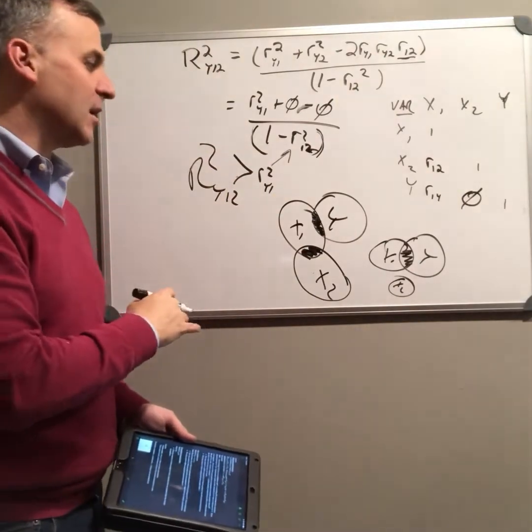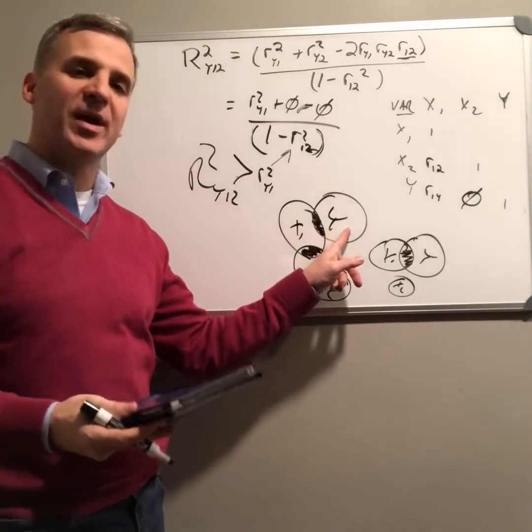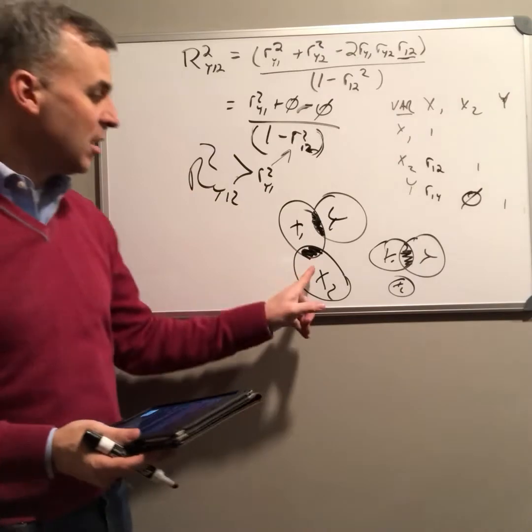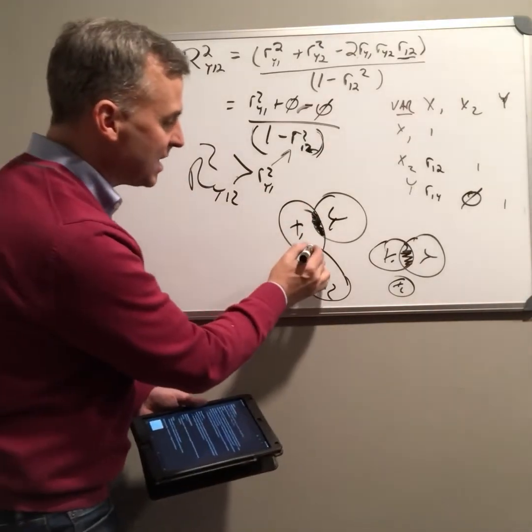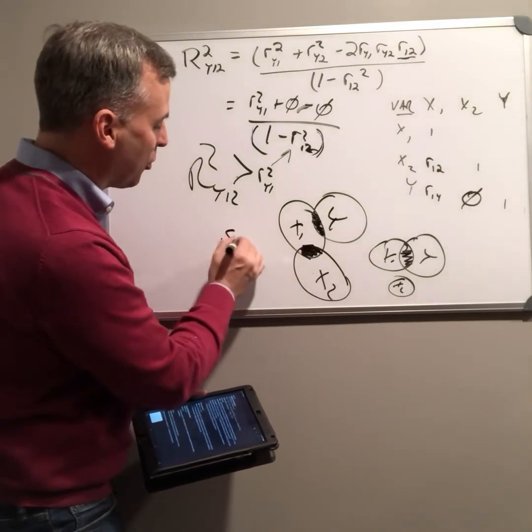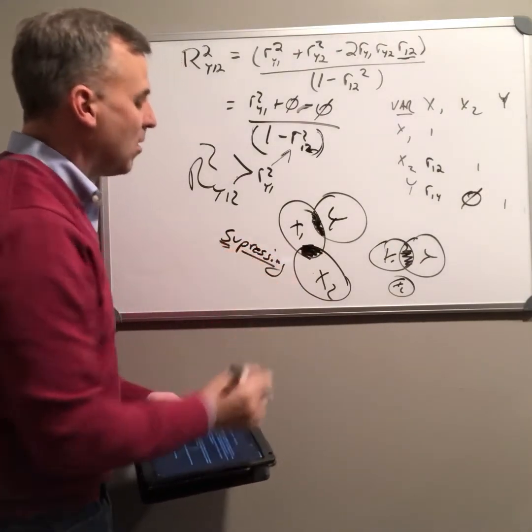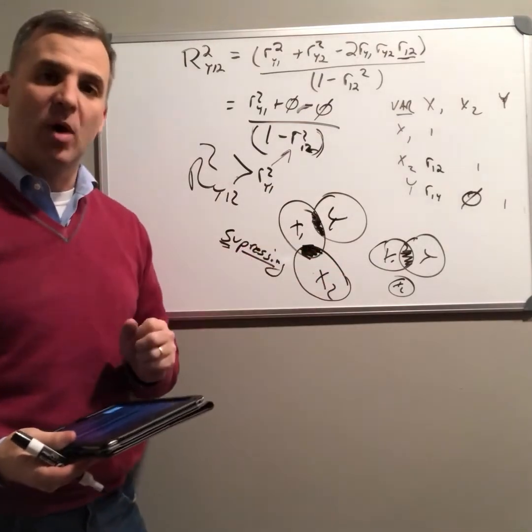It's actually going to explain more. Even though x2 here doesn't explain any additional variance in y, there's still an increase in r squared by incorporating that. And why is that? It's because this is what we call suppressing all of the irrelevant, or at least some of the irrelevant, variance in x1.